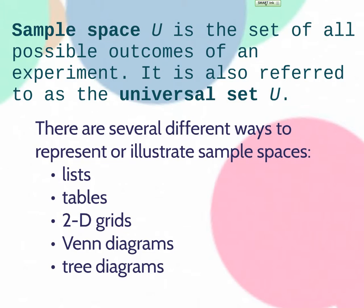The sample space, also denoted with the capital letter U, usually it's like a little bit italic. Sample space U is the set of all possible outcomes of an experiment. So we talked about the outcomes yesterday. Well, the sample space is all of the outcomes. Every different thing that could happen is considered the sample space. It's also referred to as the universal set U.